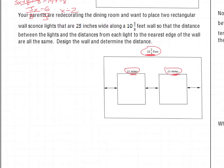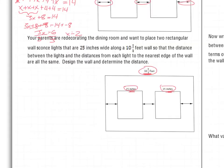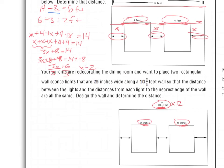We have a couple of choices: we can change the feet to inches, or we can change the inches to feet. Personally, I want to change the feet to inches so I can work with whole numbers. I'm going to multiply by 12 because there are 12 inches in each foot, so I need to change 2 and 2/3 to an improper fraction first. That gives me 32/3 times 12. I can cross-cancel, breaking 12 into 4 times 3, giving me 32 times 4, which is 128 inches.